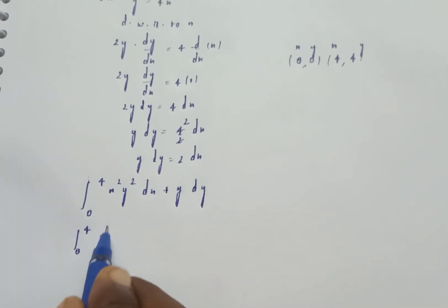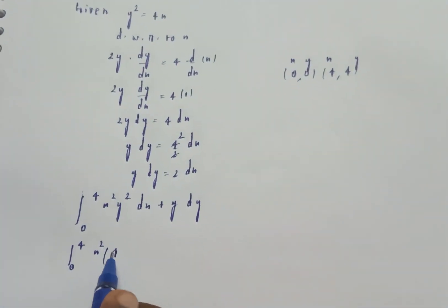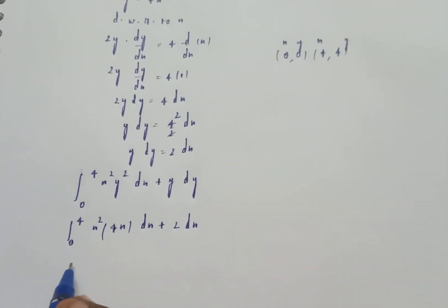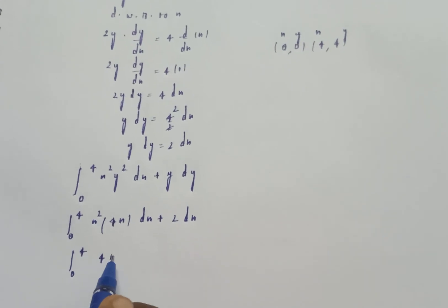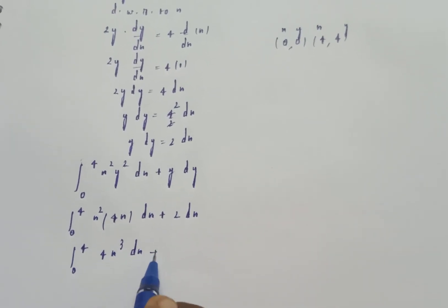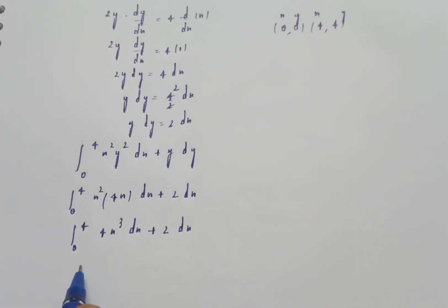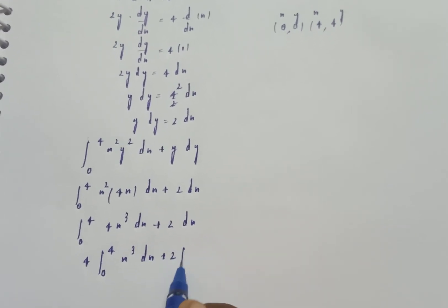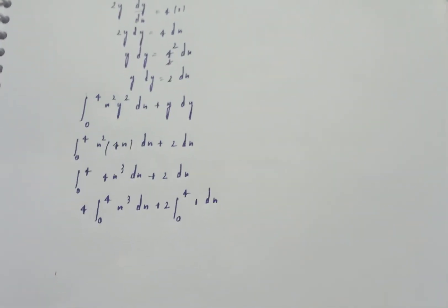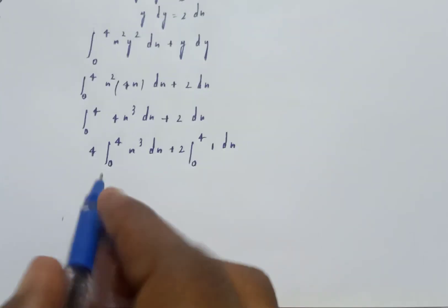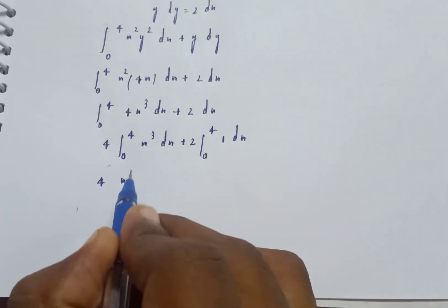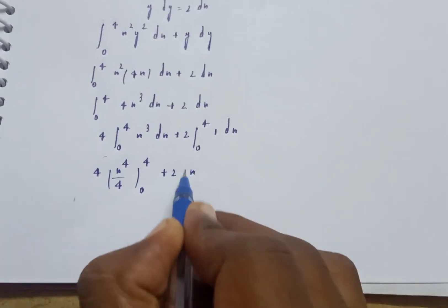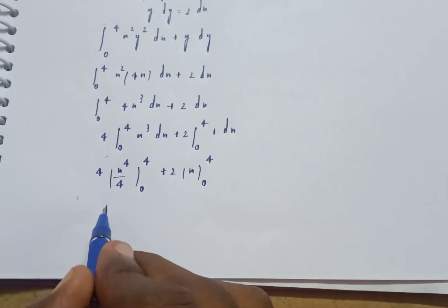From y squared equals 4x and 2y dy equals 4 dx, substitute: integral from 0 to 4 of x squared times 4x dx plus 2 dx equals integral 0 to 4 of 4x cubed dx plus 2 dx. Taking 4 as constant: 4 times integration of x cubed gives x to the 4 divided by 4, evaluated from 0 to 4, plus x evaluated from 0 to 4.